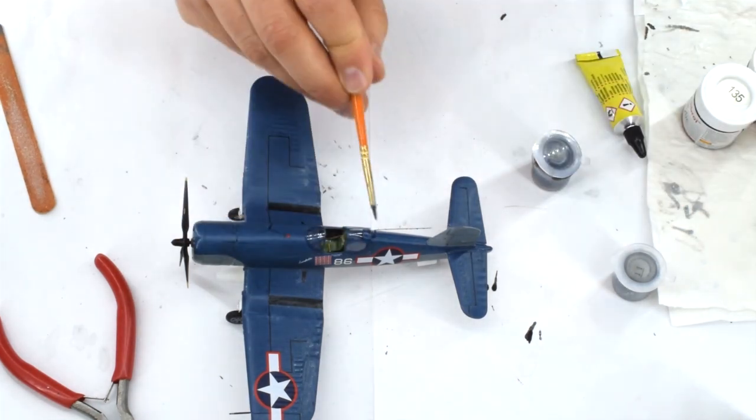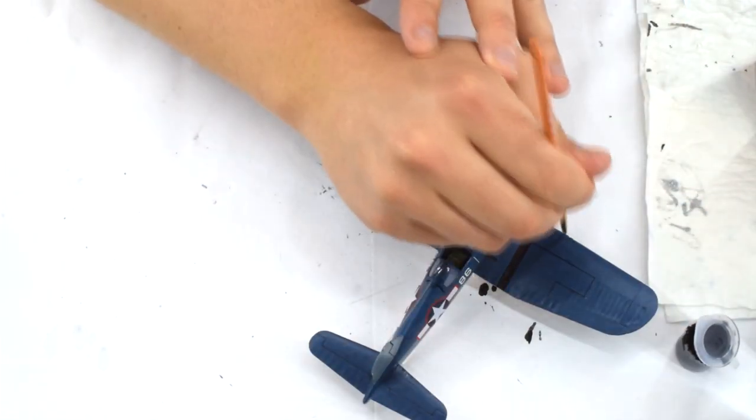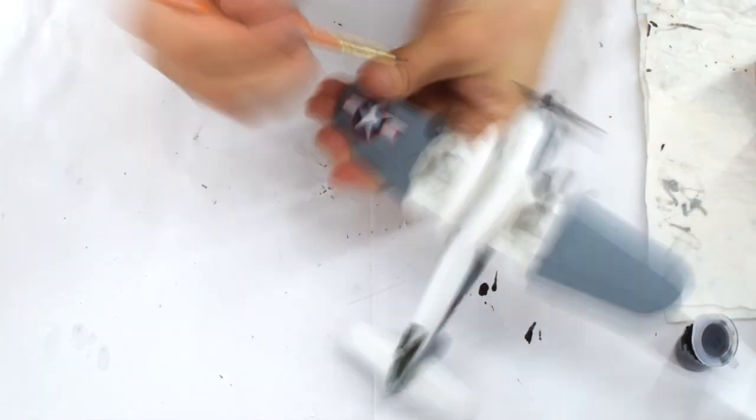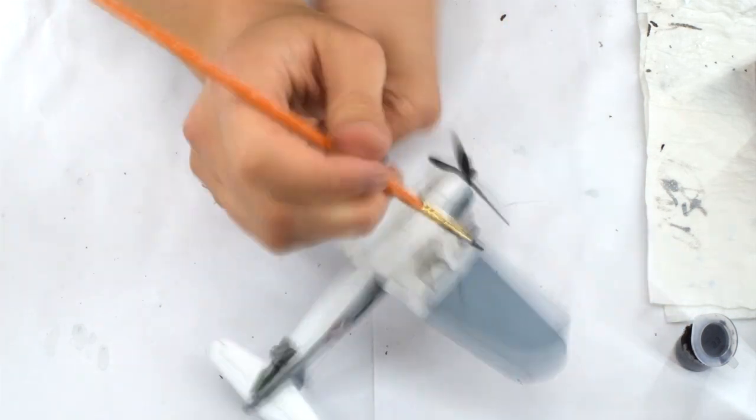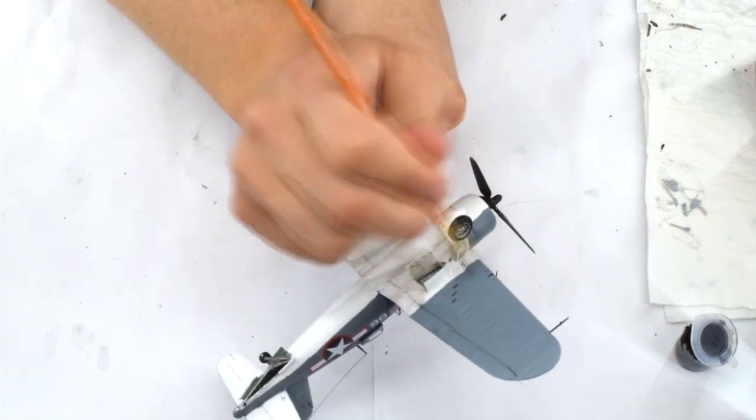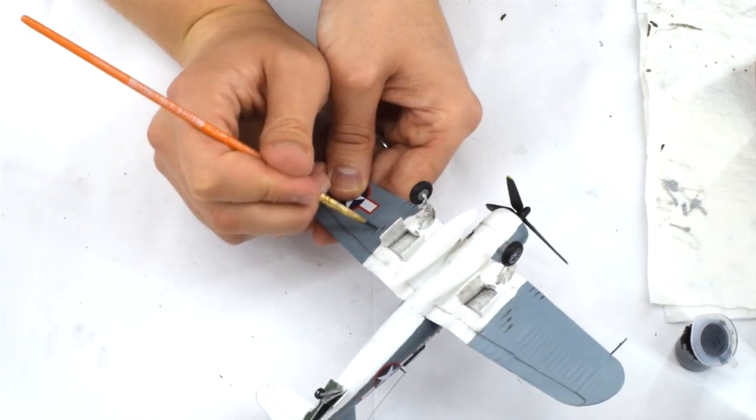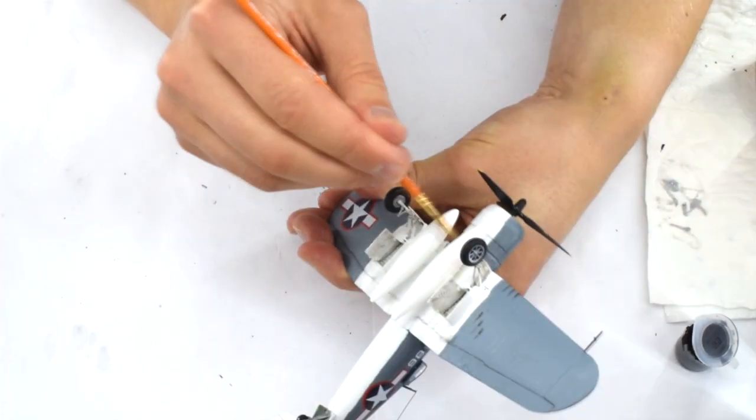The final step was to dry brush a little Humbrol 33 matte black in a few locations. I did this at the gun ports, working in the direction of airflow to help represent stains. Other locations can include the engine exhausts, oil filler caps and the spent casing ejection holes.